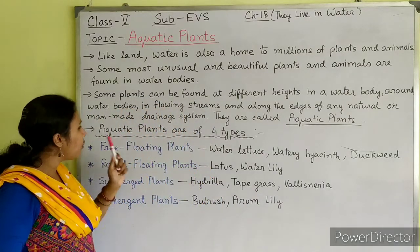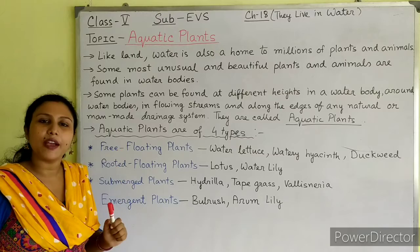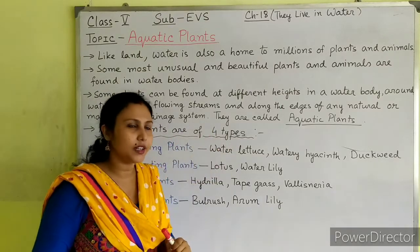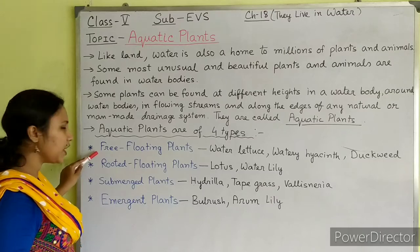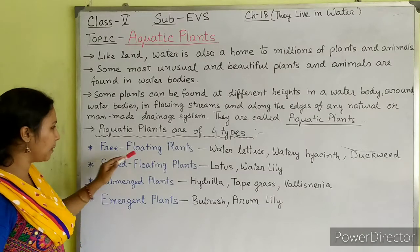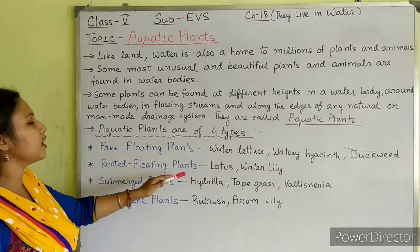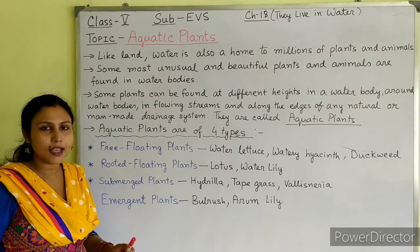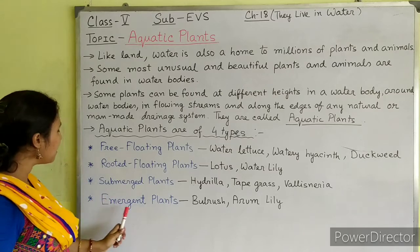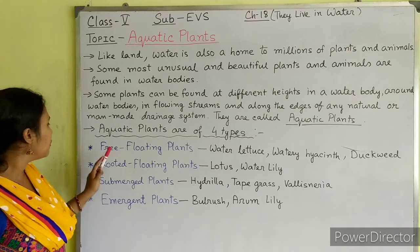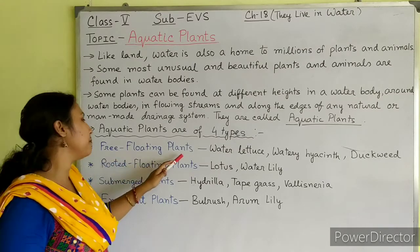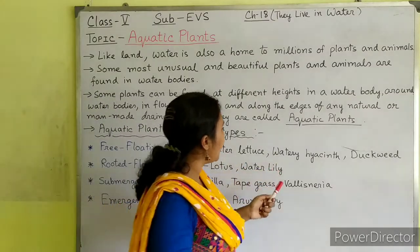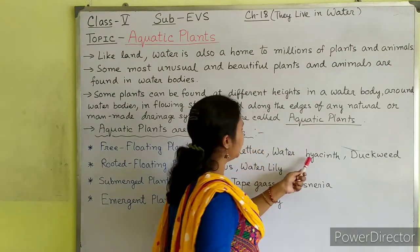There are four types of aquatic plants. First one is free floating plants. Second one is rooted floating plants. Third one is submerged plants. And the last one is emergent plants. Examples of free floating plants are water lettuce and water hyacinth.